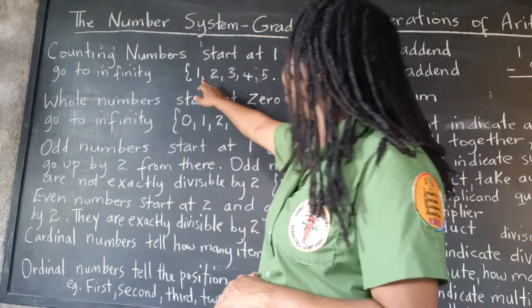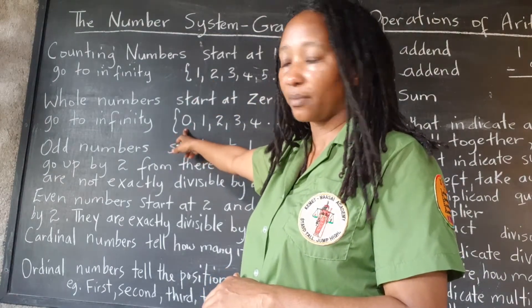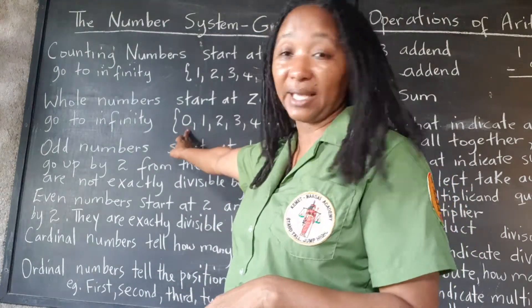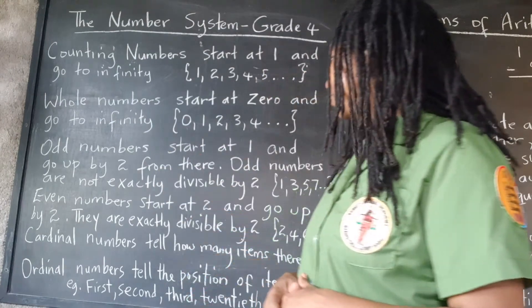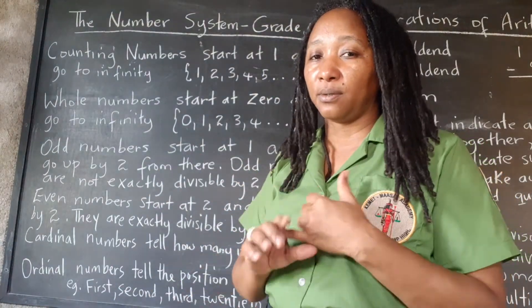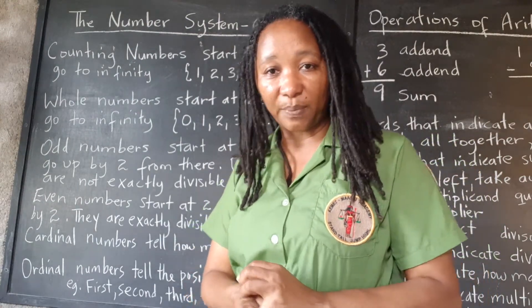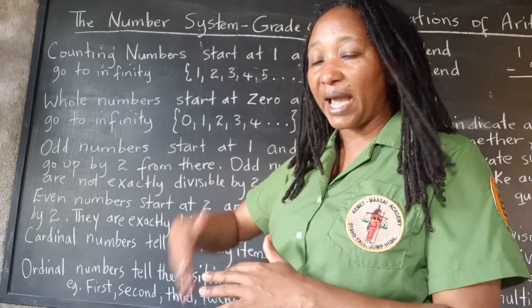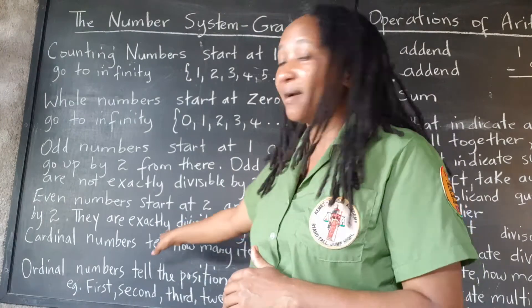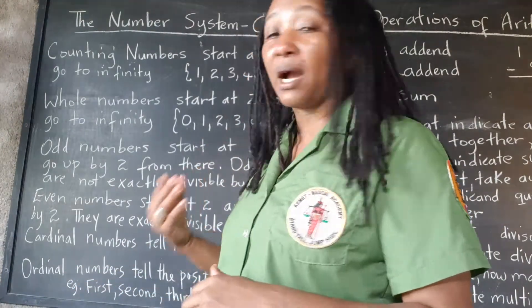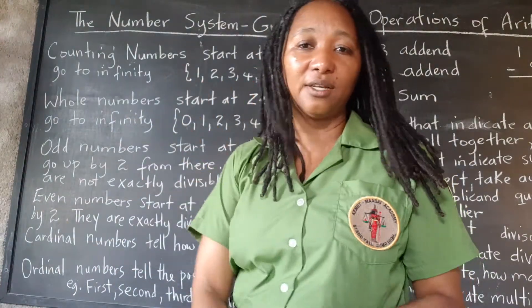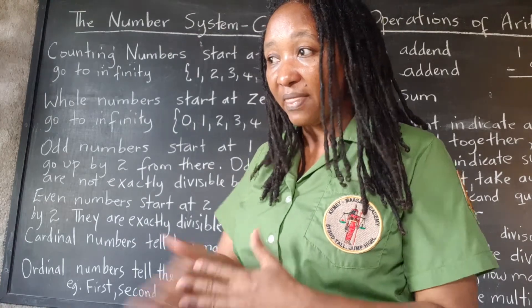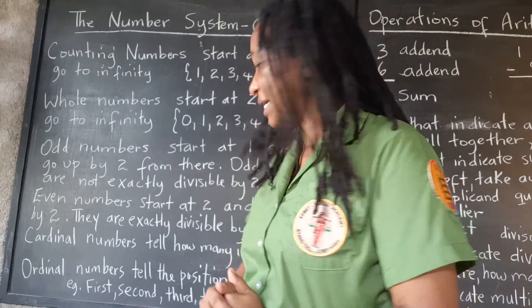Whole numbers are the counting numbers plus zero. Remember, zero is of great importance - we must recognize the importance of the digit zero. Odd numbers go up by two but are not exactly divisible by two, so we will always have a remainder of one. Even numbers also go up by two and are exactly divisible by two. Cardinal numbers are really the counting numbers - they tell us how many things. Ordinal numbers tell us where each thing lies in the line in relation to the other things.